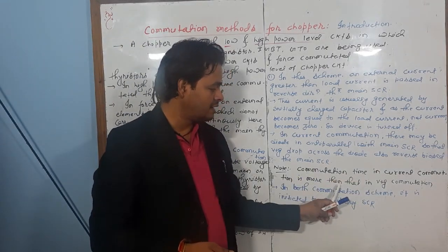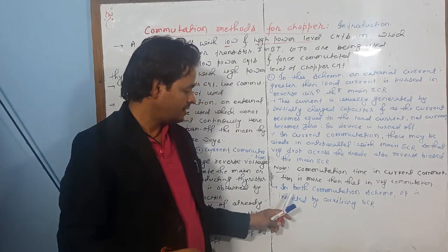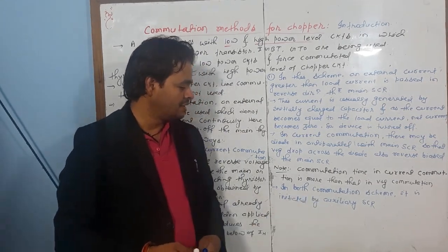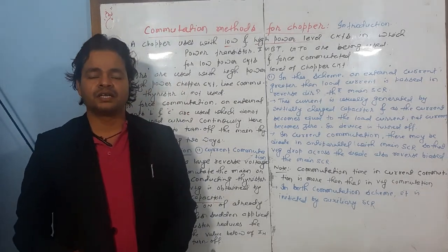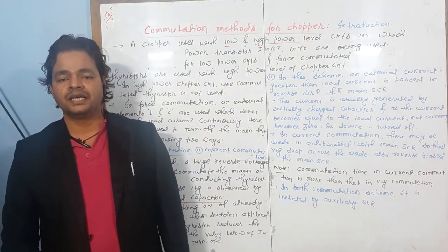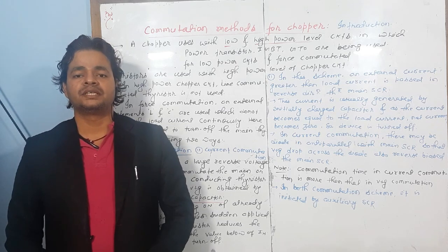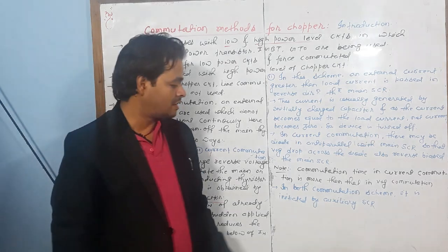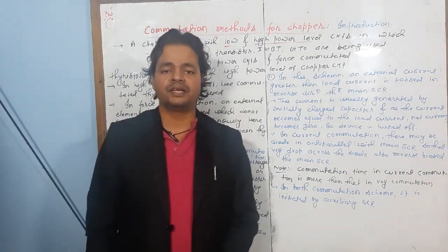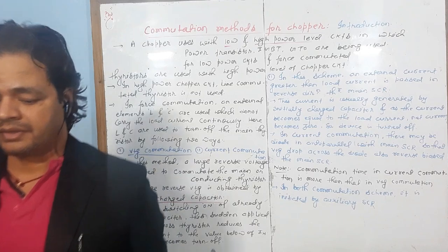In both commutation schemes, the process is initiated by the auxiliary SCR — that is, the SCR which performs the commutation is called the auxiliary SCR. In the next video lecture, we will see the voltage commutated chopper.